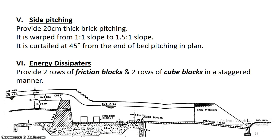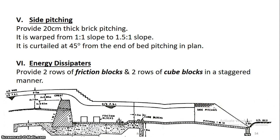Moving on to side pitching. We have now seen the wing walls — downstream side pitching. The downstream wing wall uses a warped wing with a trapezoidal shape, and then we have brick pitching on the side. The slope is increased from 1-in-1 and flattened to 1.5-in-1.